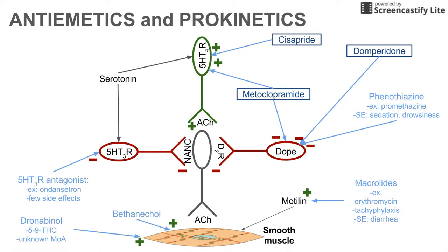Those two mechanisms are also evident in two other drugs: cisapride and domperidone. Cisapride activates that serotonin neuron on top, while domperidone deactivates that dopamine neuron on the right. Metoclopramide has a combined effect of both of those drugs.